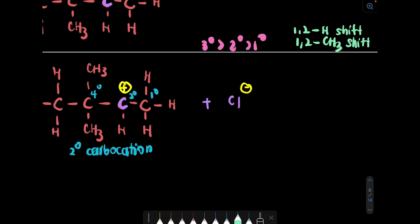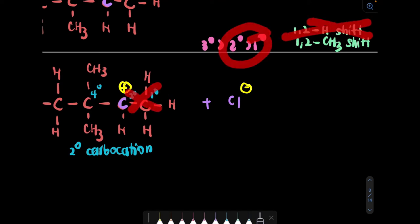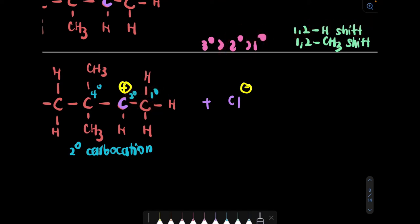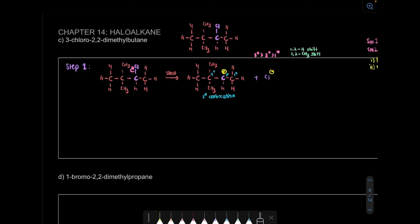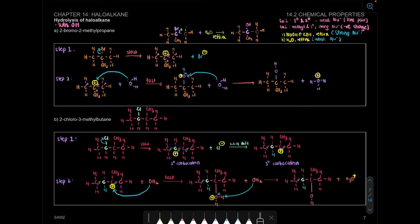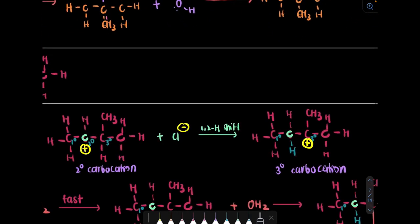We can do two types of rearrangement - there are two types: one is 1,2-hydride shift or 1,2-CH3 shift. The problem is, if we do 1,2-hydride shift, the carbocation will become primary, so we don't want that. We're going to shift to the quaternary carbon - we will shift 1,2-CH3 shift.